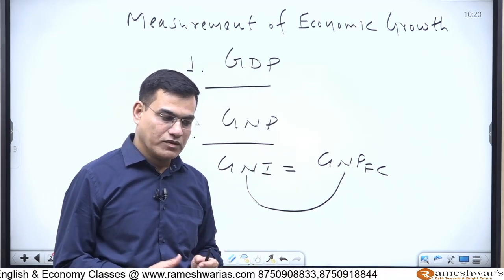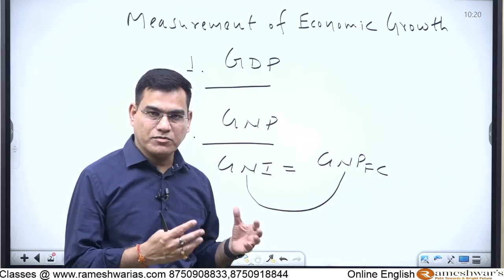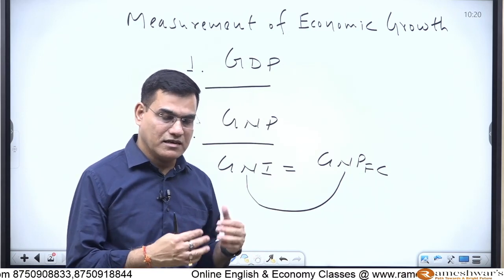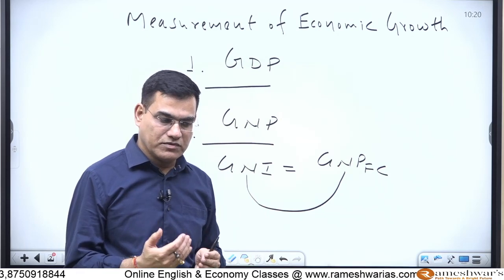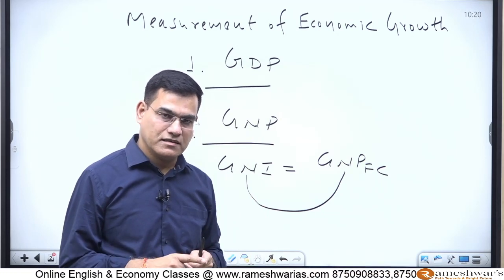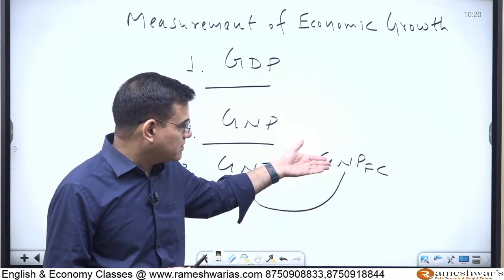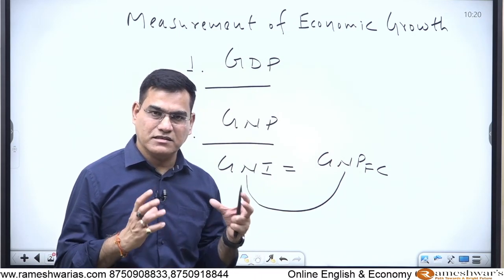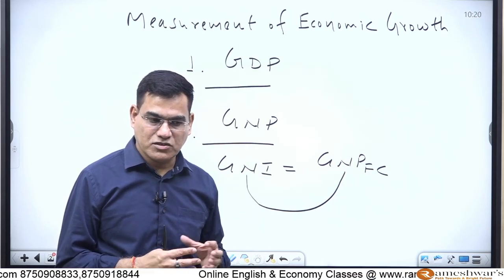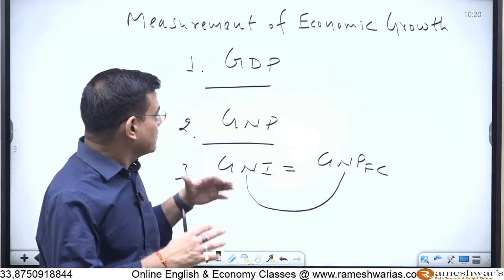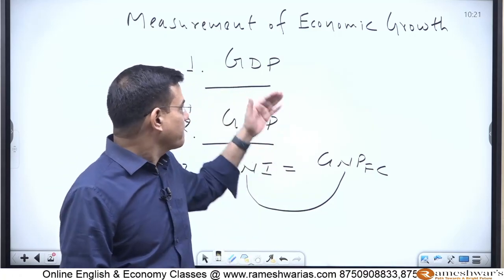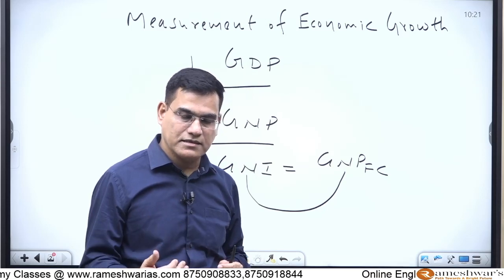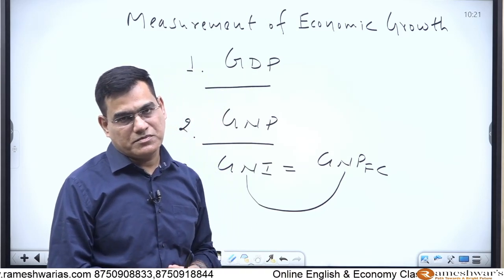According to UNDP, there are various countries which receive income from abroad — their factors are working outside and sending income back home. So we should use a concept that includes earnings from abroad. In 2010, UNDP switched to using GNP instead of GDP. If you want to emphasize resource utilization within your domestic boundary, go for GDP. But if you want to capture the contribution of your citizens at home and abroad, use GNP.